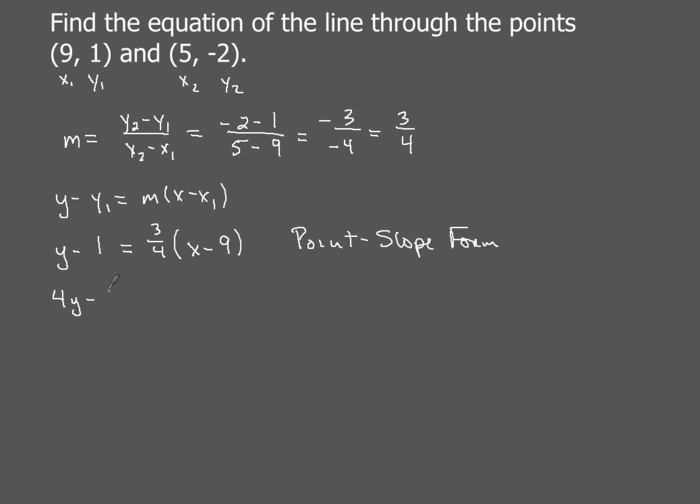So that would give me 4y minus 4 on the left. And on the right-hand side, you have to be careful here, it's just going to be 3 times the quantity x minus 9. And then when you distribute, you'll get 4y minus 4 equals 3x minus 27. And then when I move the 4 over, I'll get 4y equals 3x negative 27 plus 4 gives me minus 23.